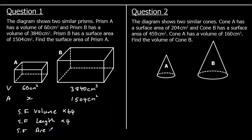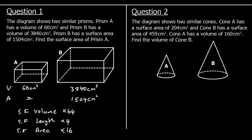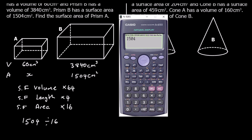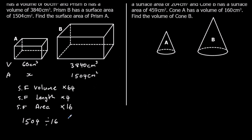The scale factor for area is the scale factor for length squared, so 4² = 16. To go from the small shape to the big shape: volume ×64, length ×4, area ×16. To go back from the big shape to the small shape: divide by 64, 4, and 16 respectively. We want the area, so it's the big shape's area divided by 16: 1,504 ÷ 16 = 94 cm².